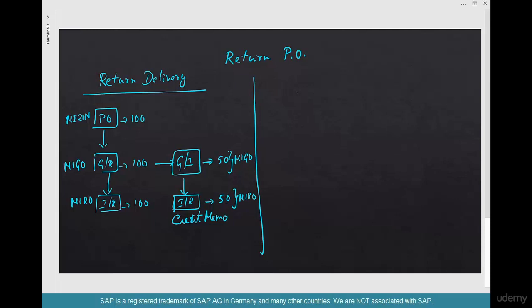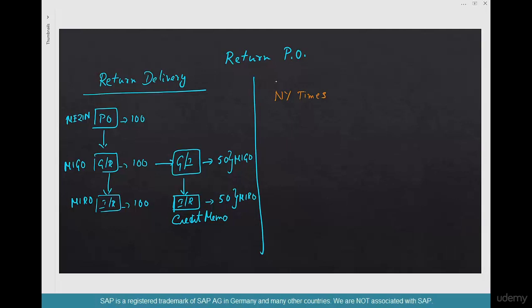To understand a Return PO, let's take an example. In our coffee shop, we sell newspapers — say the New York Times. We sell maybe 50 a day, but we don't know exactly, so we typically get 75 or 100 every day. There's a PO that gets us 100 newspapers every day, and we receive 100 and get an invoice for 100.